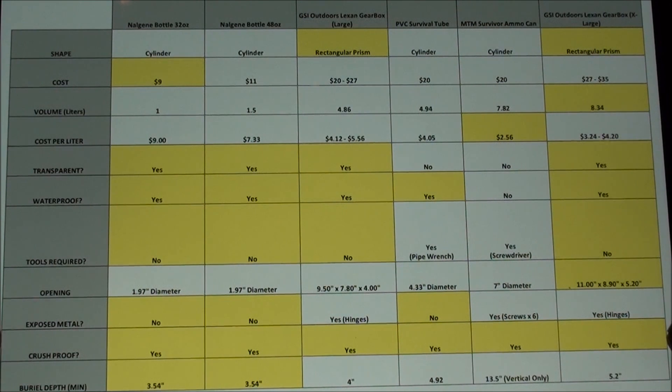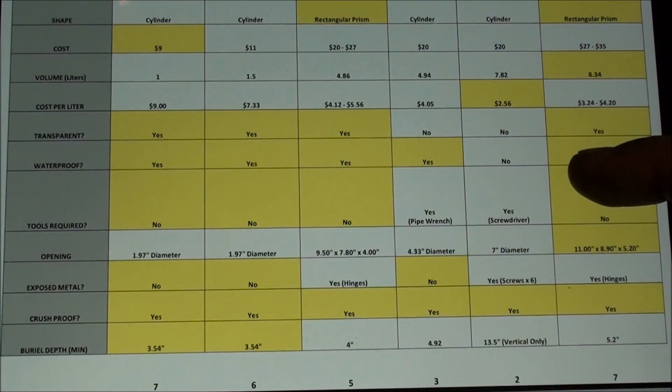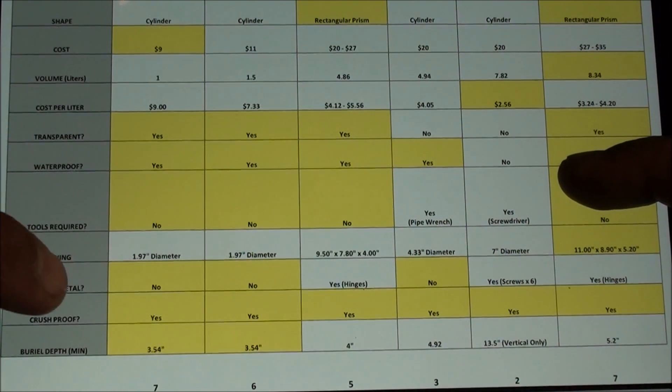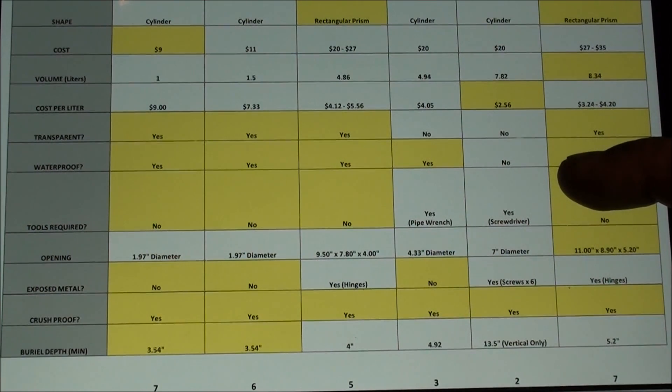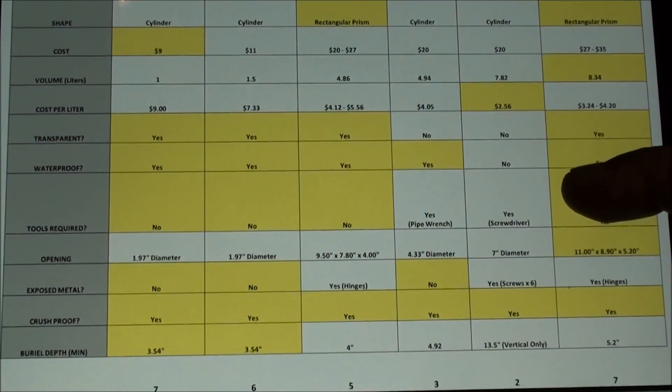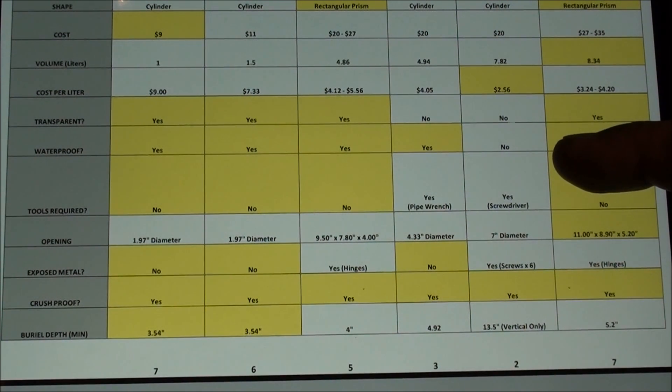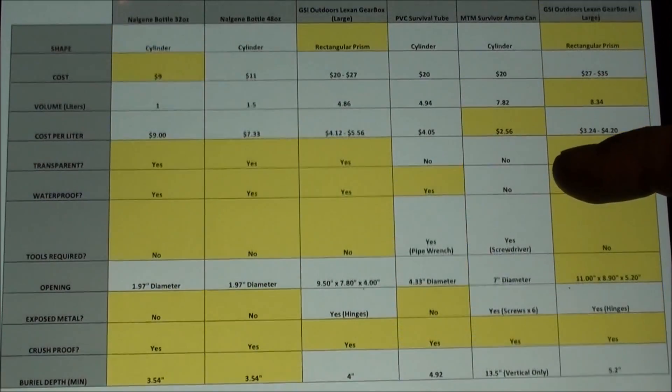All of them passed my crush proof test at various weight limits so that was one that was all across the board. And then the next category that I have here with regard to burial depth, you might not have a full-size shovel with you maybe you'll just have a little hand shovel. So the one that has the minimal burial depth is the Nalgene water bottles mostly because they're the smallest ones. The GSI outdoors gearboxes and the PVC survival tube both have very minimal burial depths as well. The MTM survivor ammo can because it needs to be placed vertically because it's not really waterproof, that has a 13.5 inch vertical burial depth minimal so that one's the largest one.